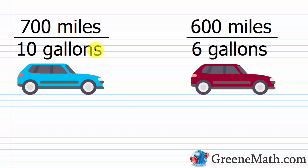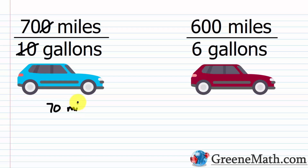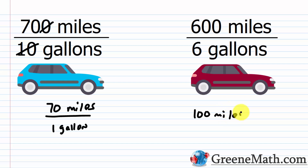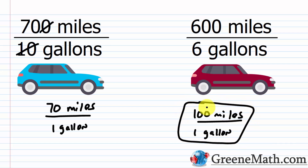For this blue car, it goes 700 miles per 10 gallons. For this red car, it goes 600 miles per six gallons. To compare them, divide the numerator by the denominator. 700 divided by 10 gives 70 miles per one gallon — or 70 MPG. 600 divided by six gives 100 miles per one gallon — 100 MPG. So the red car gets better gas mileage: 100 miles per gallon versus only 70 miles per gallon.